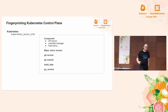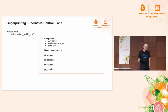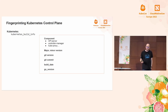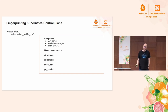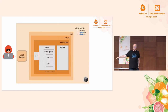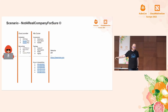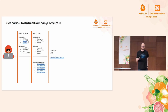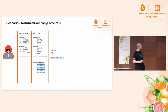From the Kubernetes component metrics that are exposed natively, we have the kubernetes_build_info metric. This gives us information on the exact version — not only major and minor, but also the git commit and build date of each component on the Kubernetes control plane. This is important because now we can start matching known vulnerabilities (CVEs) for the specific versions of the control plane components.